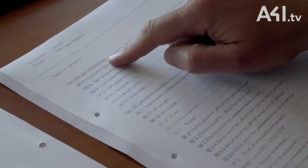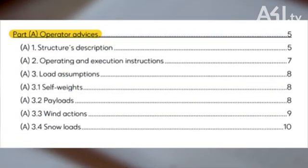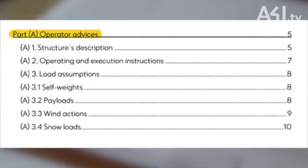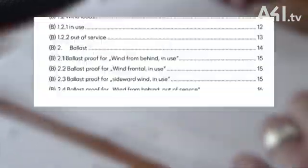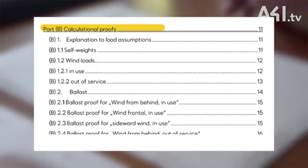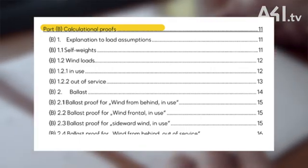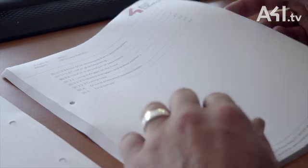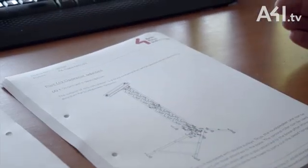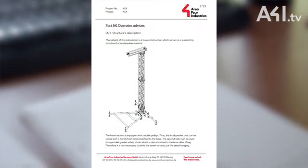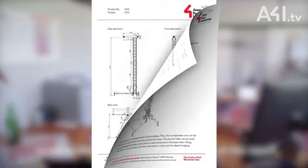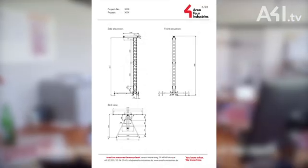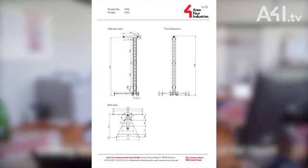In the first chapter, all important information for operation is clearly and comprehensively summarized. In the second chapter, the mathematical proofs are listed, which are usually only important for the test engineer. Our report begins with the description of the object, which enables an on-site inspector to clearly identify the structure. This includes a description of the structure's functionality and its external dimensions.